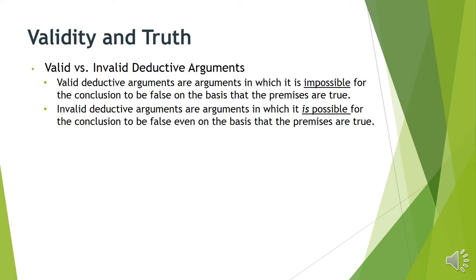The key difference: in deductive arguments, there's an attempt — if the premises are true, the conclusion must be true. Valid deductive arguments provide full support. Invalid deductive arguments are ones which are shooting for guarantee but don't actually give it to you, so it's possible the conclusion could be false when the premises are true.